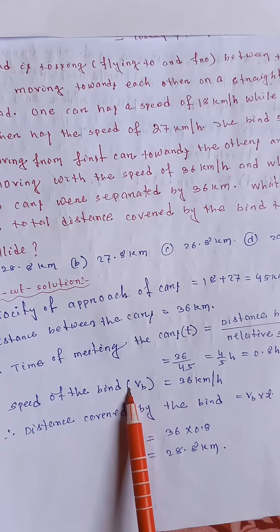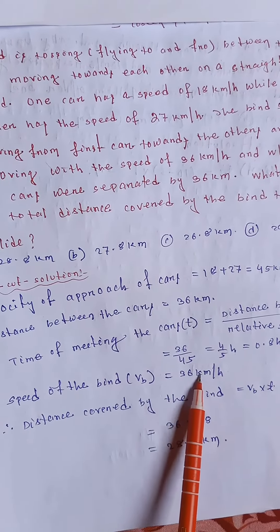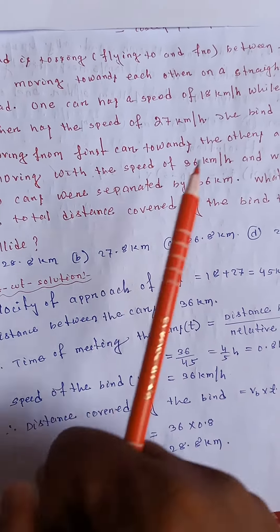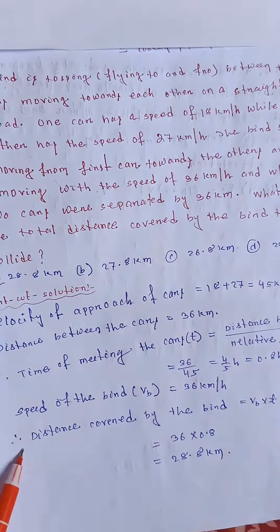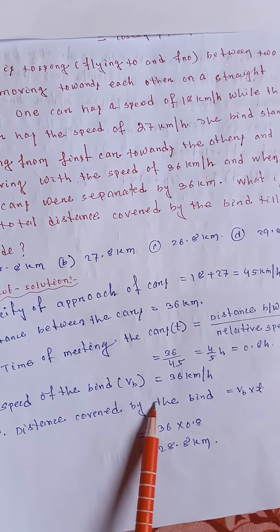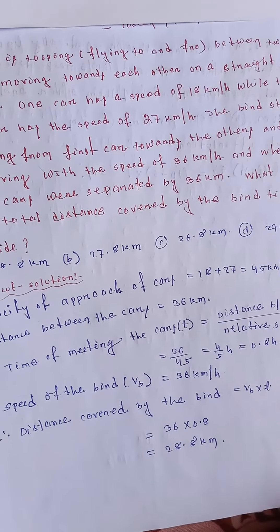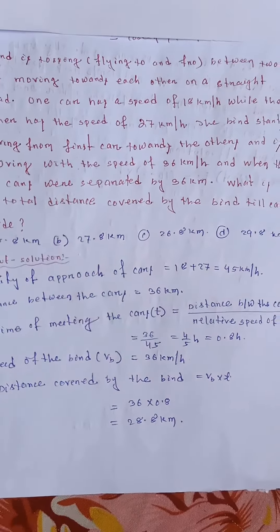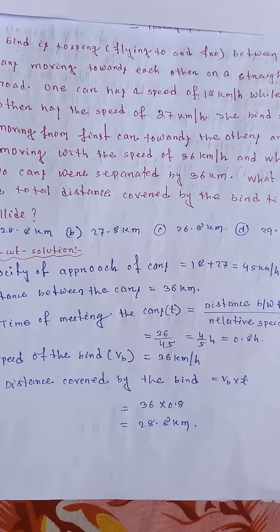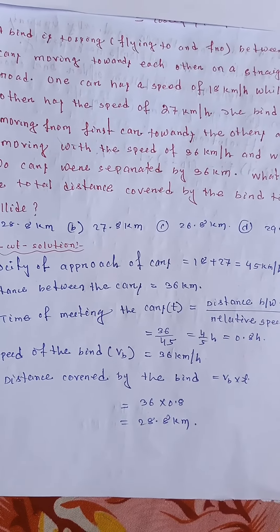Speed of the bird. Speed of the bird is equal to 36 km per hour. So, the distance covered by the bird is equal to velocity into time. So, we get 28.8 km per hour. Sorry. 28.8 km. Not hour. 28.8 km.